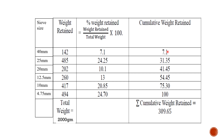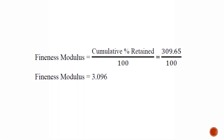Then add 7.1 and 24.25 to get 31.35. Then 31.35 plus 10.1 equals 41.45. Then 41.45 plus 13 equals 54.45. Repeat the procedure up to the 4.75 mm sieve, then add all cumulative weight retains. The cumulative percentage retain is 309.65. Dividing by 100 gives a Fineness Modulus of 3.096, which falls within the coarse sand range of 2.9 to 3.2 — so this sand is suitable as coarse aggregate.